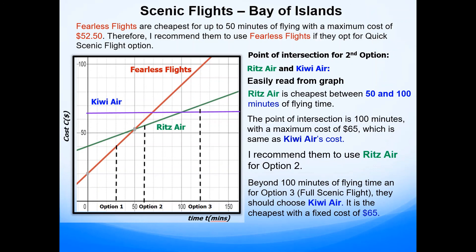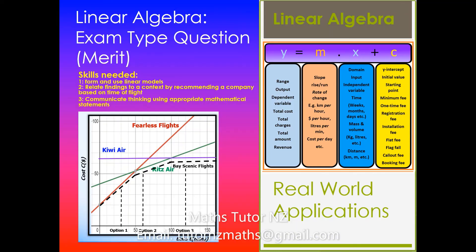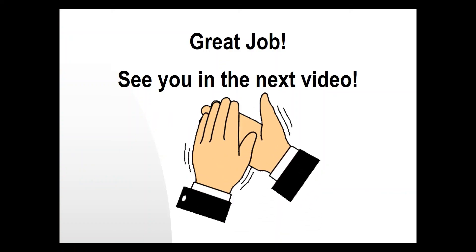Hope it makes sense. In the next video I will be looking at the requirements for excellence. Here's a quick summary of what we've just covered. The skills required for merit are: forming and using linear models, relating findings to a given context by recommending a company based on time of flight — meaning giving a range of values that will be cheapest for each option — and also communicating findings using appropriate mathematical statements. Thanks for watching. I will see you in the next video.